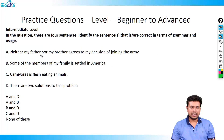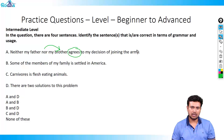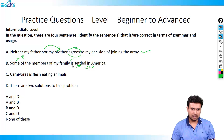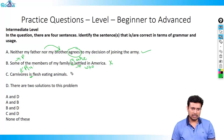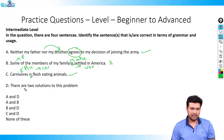Next question: sentence A — neither my father nor my brother agrees. The second noun is 'brother', which is singular, and 'agrees' is singular — this is right. Sentence B — some of the members of my family is settled. Who is settled? Some of the members — 'some' is plural, so instead of 'is' it should be 'are'. Wrong. Sentence C — carnivores are flesh-eating animals. Carnivores is plural and takes a plural verb, so this is correct. Sentence D — there are two solutions to this problem. 'Are' and 'two solutions' are both plural — correct. So the right answers are C and D.